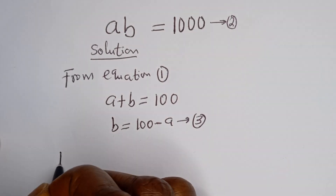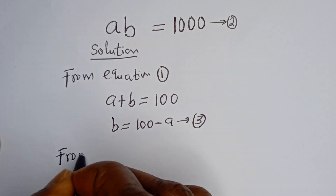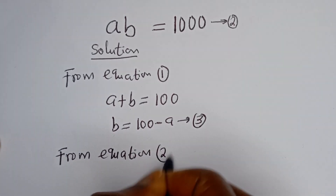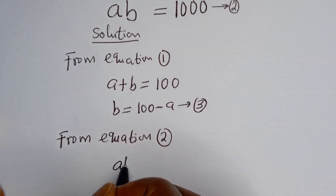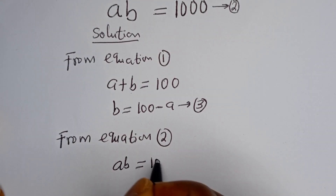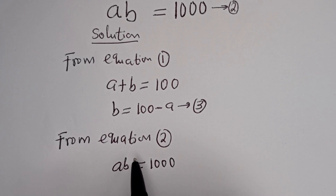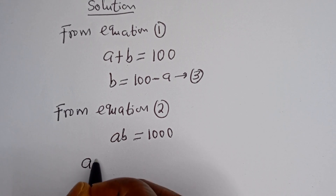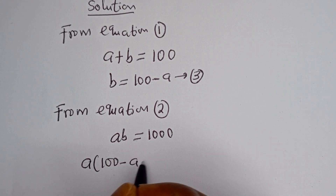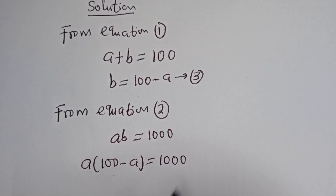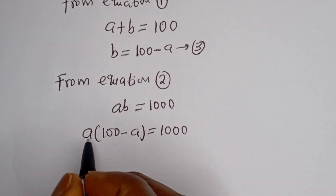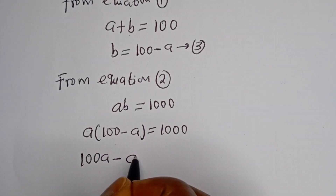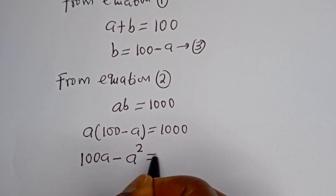Also, from equation 2, AB is equal to 1000. We can then substitute for B. When B is equal to 100 minus A, we have A bracket 100 minus A is equal to 1000. Let's open the bracket: A multiplied by 100 is 100A, minus A multiplied by A is A squared. It's equal to 1000.